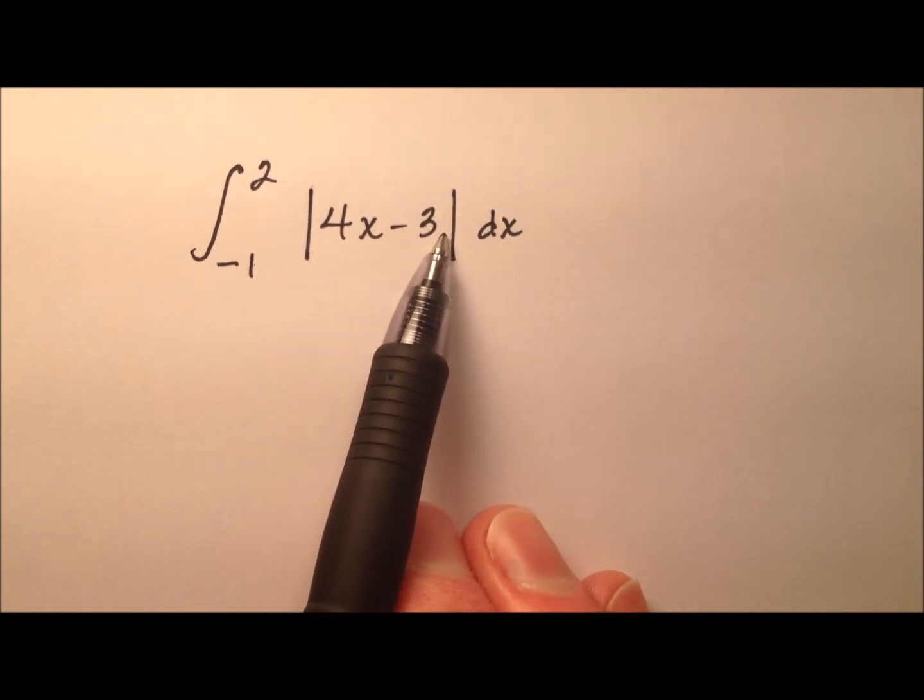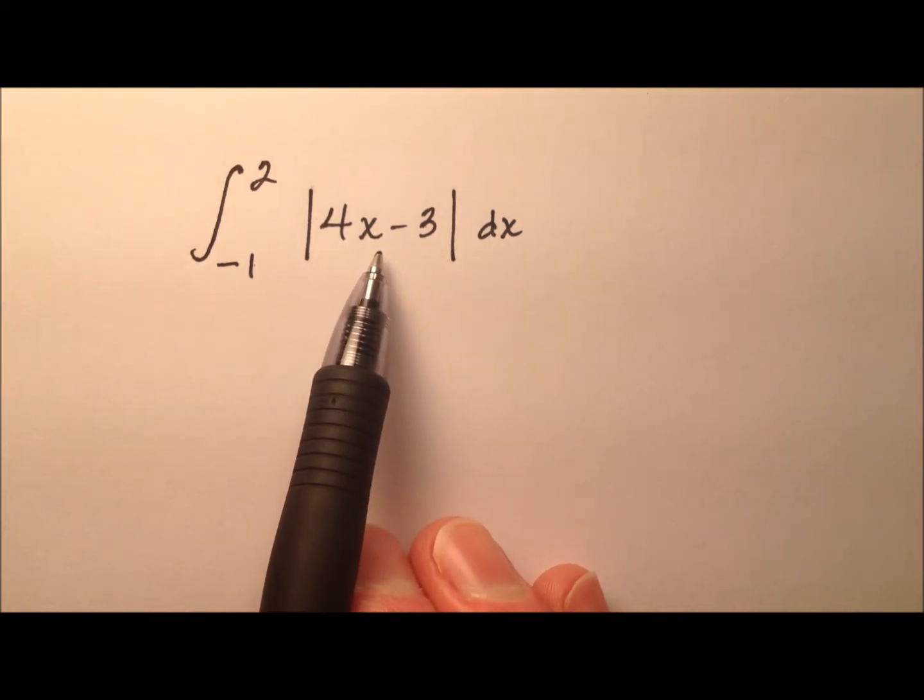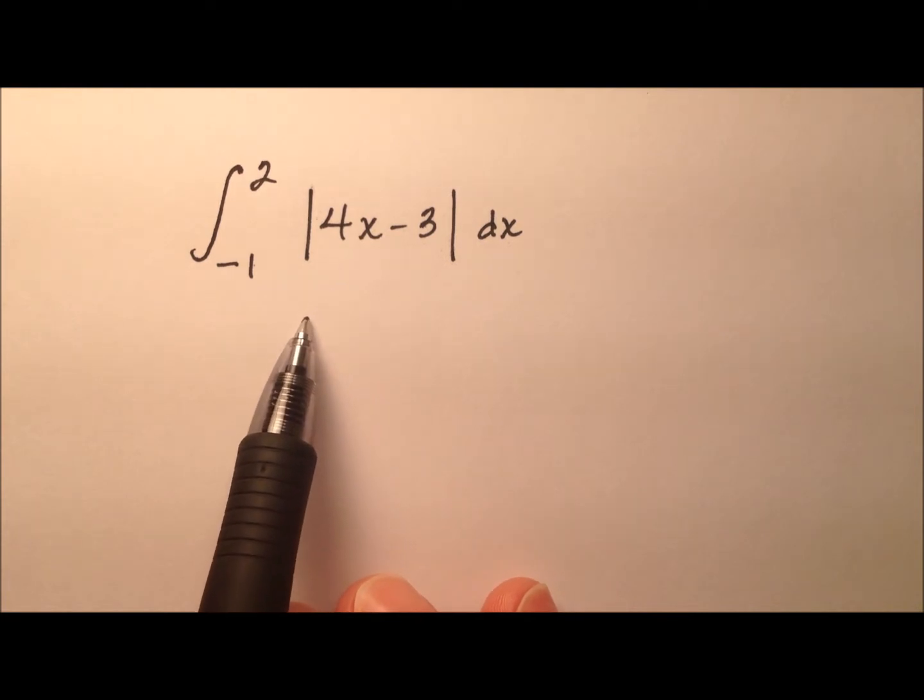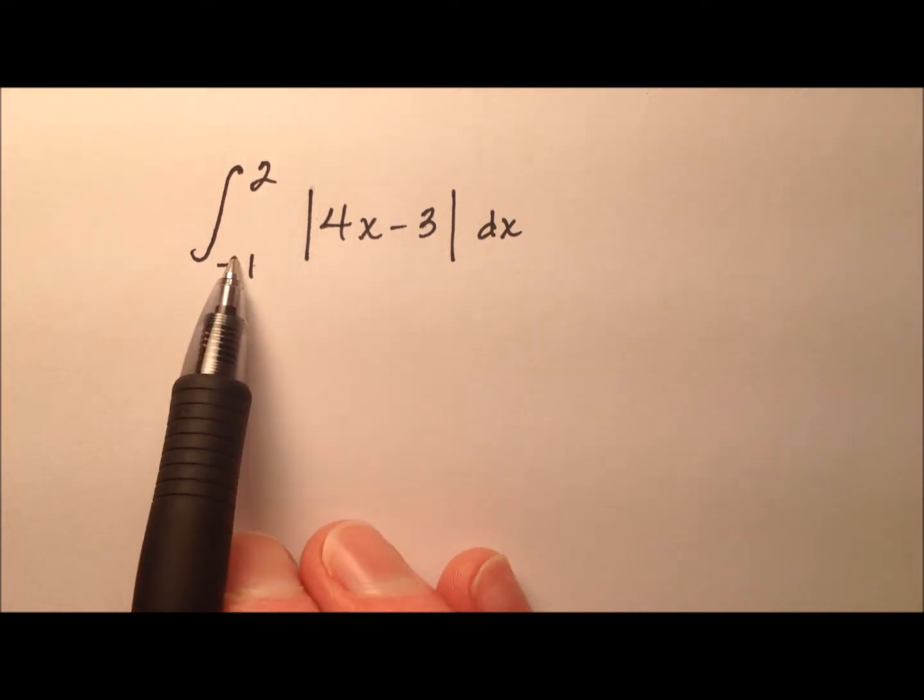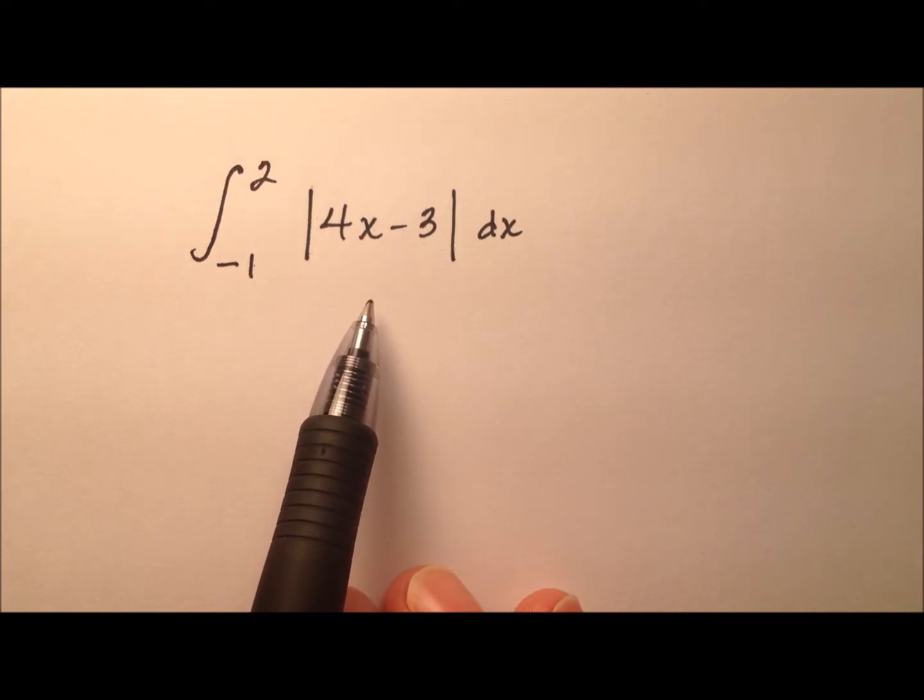4x minus 3 is actually a nice linear function, so when we graph this 4x minus 3, it will be a line. The slope is positive 4, so it's a line that will be increasing as we move from left to right, and at some point in the middle here, we're going to have an x-intercept.